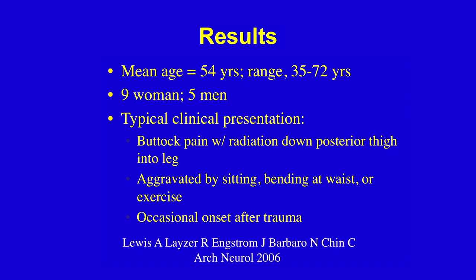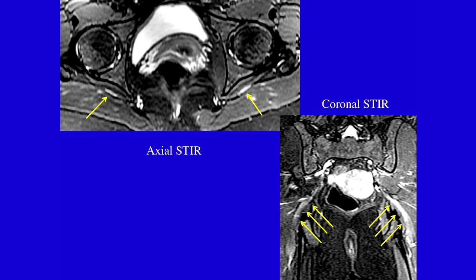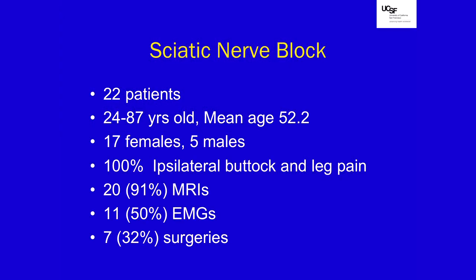We looked at these patients with MR imaging and found abnormalities that we can actually see in the nerve itself, helping to pinpoint this as the area of concern. Here we can see MR images in the axial and coronal plane that are T2-weighted with fat saturation, at the level of the notch. On the left side in this patient with left-sided sciatica, the nerve is bigger and brighter — also visible in the coronal plane after it exits from beneath the piriformis muscle, compared to the normal right side.